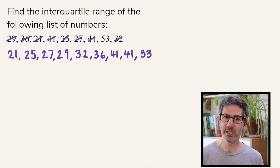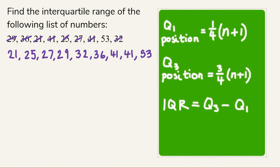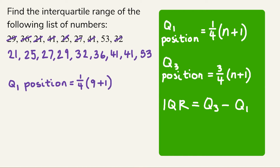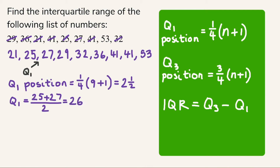Now we use our formulas to find the positions of the lower and upper quartiles. We've got nine values, so the position of the lower quartile is a quarter of (9 + 1) — a quarter of 10 — which is 2.5. That means the lower quartile is halfway between the second and third values, halfway between 25 and 27, which is 26. If it's not obvious, you can add those two values together and divide by two.